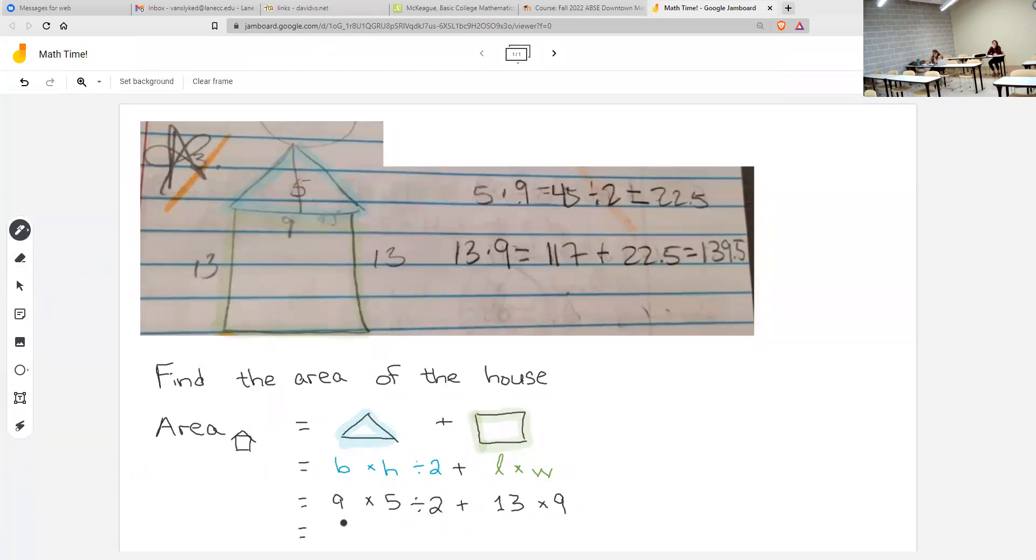In any case, let's actually find the answer. Nine times five is 45. Divide by two is 22.5. Thirteen times nine is 117. And we add them together and get 139.5, just like up above. We don't have a unit. It doesn't say feet or yards or meters or whatever. So I'm just going to say square units. If you left it off, that would be forgivable.